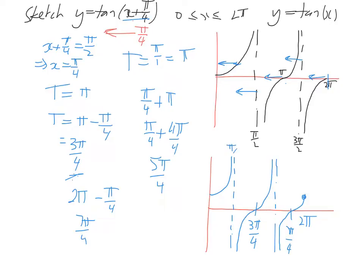So here we've got pi on 4. And this one is at 5 pi over 4. So that's how we go about sketching a tan graph with a phase shift.